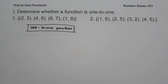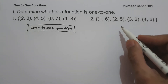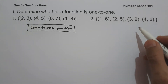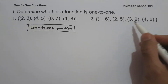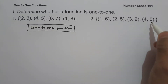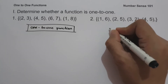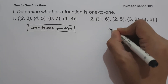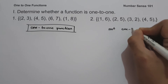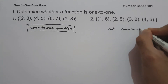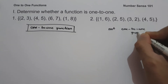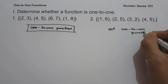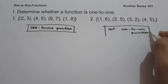On example number two, we have the ordered pairs (1,6), (2,5), (3,2), and (4,5). This function is not one-to-one because 2 and 4 have the same y value of 5.